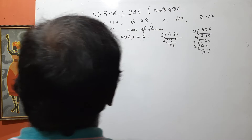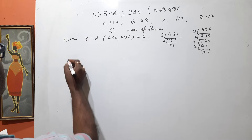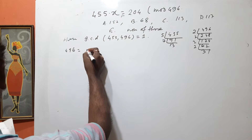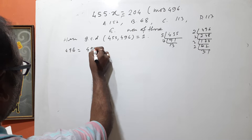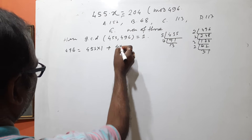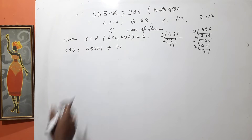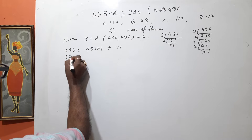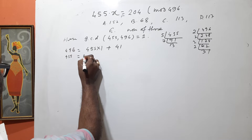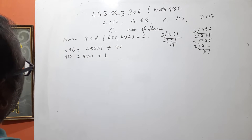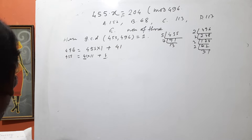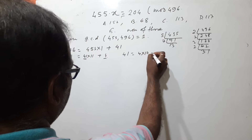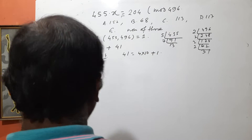Now find the relation between the two numbers. If we divide 496 by 455, the remainder we get is 41, so: 496 = 455·1 + 41. Using this technique, if we divide 455 by 41, we get: 455 = 41·11 + 4. Again, dividing 41 by 4: 41 = 4·10 + 1, and the remainder is 1.